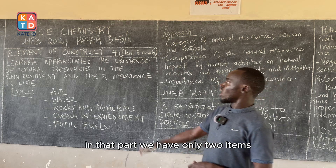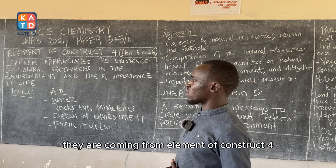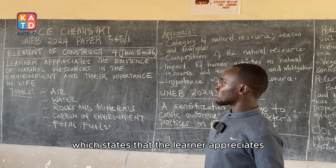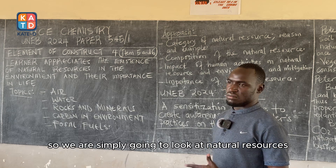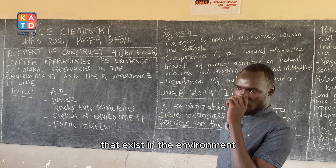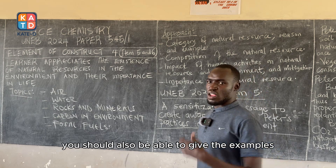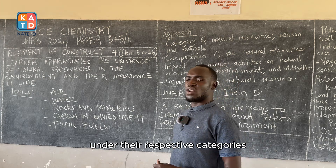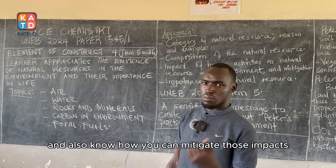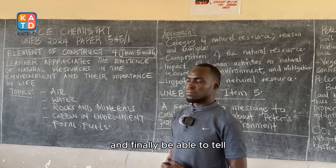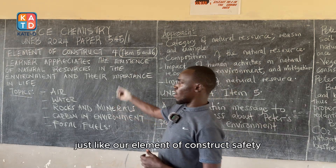In Part 2, we have only two items: Item 5 and Item 6. These items are coming from Element of Construct 4, which states that the learner appreciates the existence of natural resources in the environment and their importance in life. We are going to look at natural resources — you need to know the categories, explain each category, give examples, know the impact of human activities, how to mitigate those impacts, and how natural resources are important in the environment.